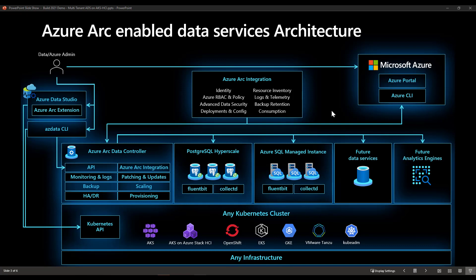So given this, how does one actually deploy Azure SQL managed instances? First is to deploy the Azure Arc data controller. You can do it using Azure Data Studio or the azdata CLI, which uses the Kubernetes API to pull down the container images needed to stand up the Azure Arc data controller. The data controller is simply a set of container images provisioned on Kubernetes that provide all the management services such as monitoring, backup, etc. Once the data controller is in place, different instances can be provisioned such as SQL managed instance or Postgres Hyperscale.